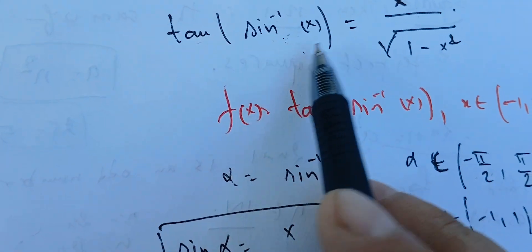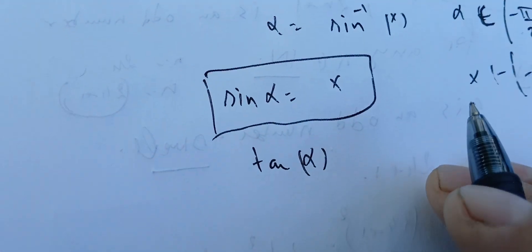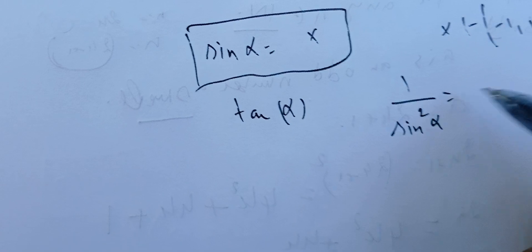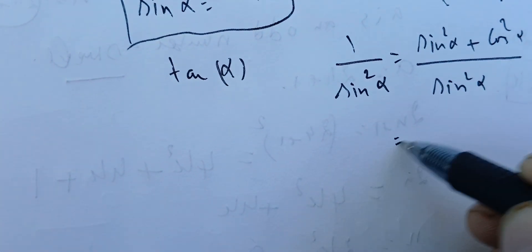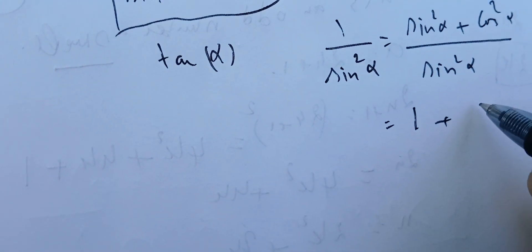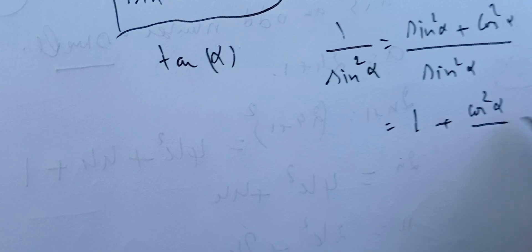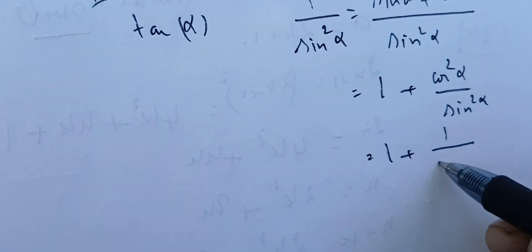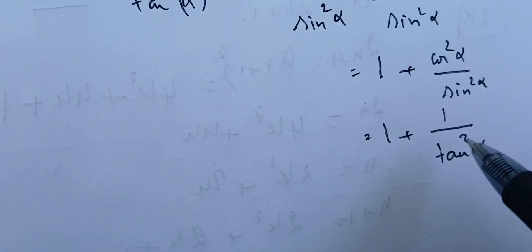A key idea is the relationship between sine and tangent. We know that 1/sin²(α) = (sin²(α) + cos²(α)) / sin²(α), since the numerator equals 1. Expanding, this gives 1 + cos²(α)/sin²(α), and cos²/sin² is 1/tan²(α). So we have 1/sin²(α) = 1 + 1/tan²(α), which simplifies to tan²(α) + 1 over tan²(α).